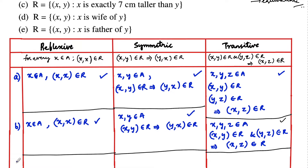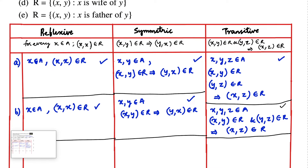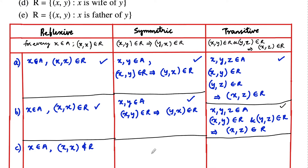Let's check the third one, (c): r = {(x, y) such that x is exactly 7 centimeters taller than y}, so x = y + 7. For reflexive: consider a person x belonging to A — a person cannot be taller than himself; he can only be equal in height to himself. So (x, x) does not belong to r, meaning this relation is not reflexive.